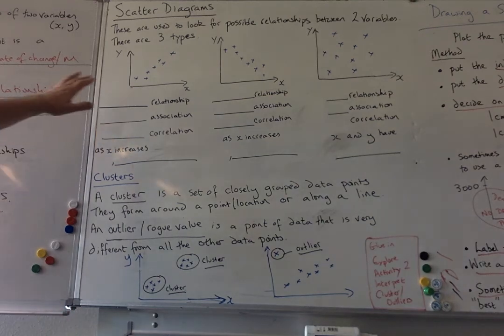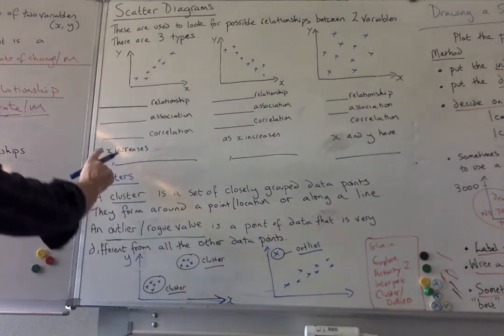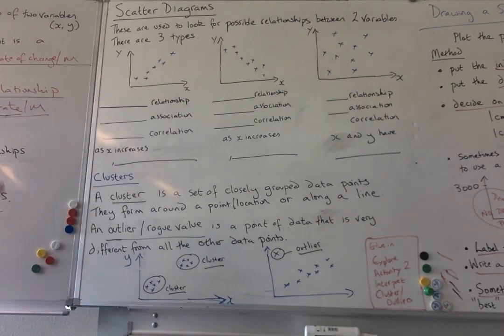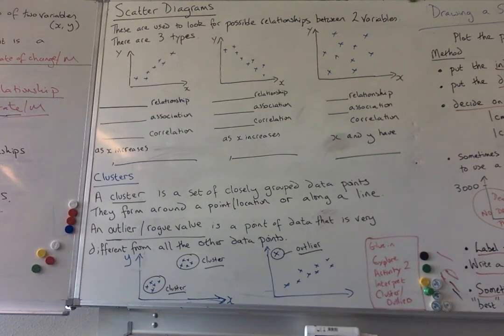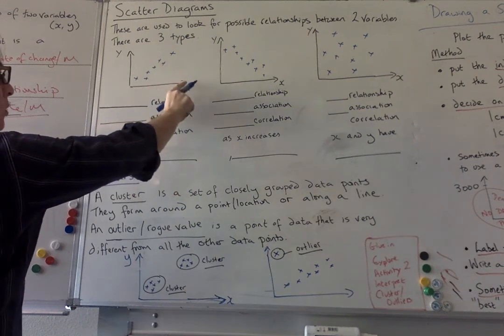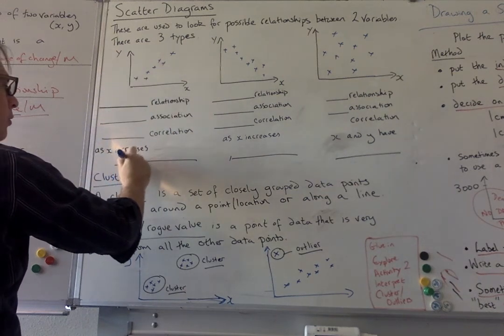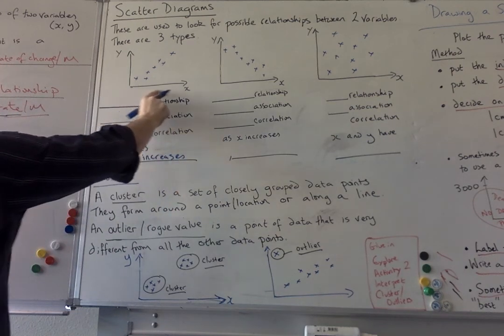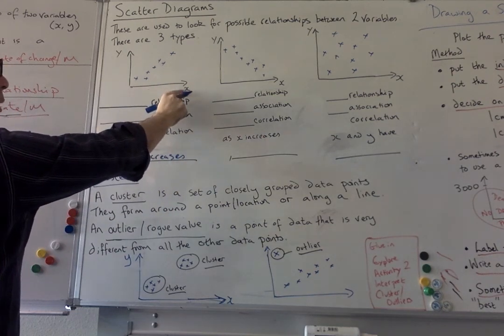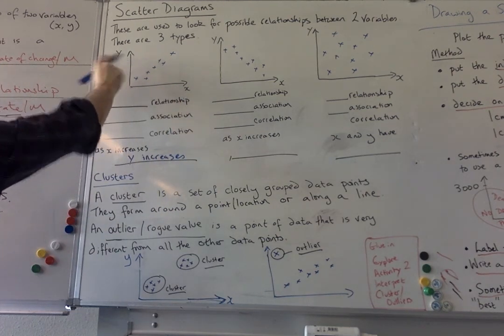So this one, we've already seen this type before. So as the X numbers are increasing can you tell me what's happening to the Y numbers? Stop the video and write that down. So did you say as the X increases the Y increases? And if you remember this was the love graph where the more time he spent with the girl the more he loved the girl.